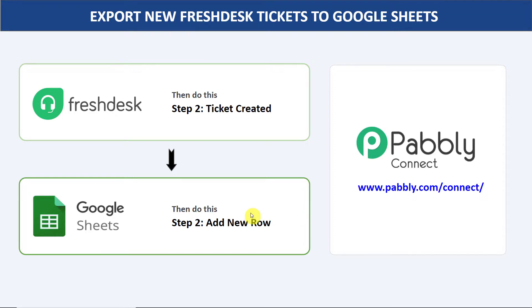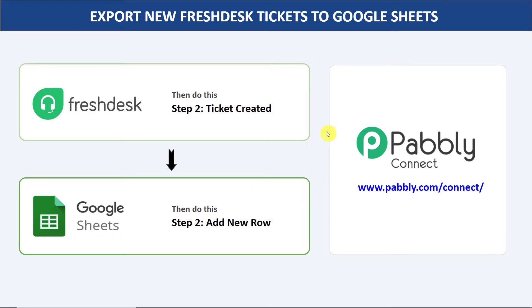The issue is there is no direct connection between Freshdesk and Google Sheets. That is why I will be using an integration and automation software called Pably Connect, which integrates Freshdesk and Google Sheets. The best part is that a person without any technical background can perform this integration easily. Now before I show you the steps, let's begin with a real-time example.